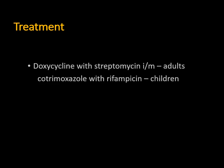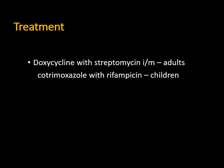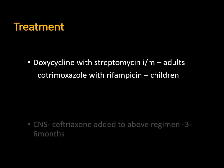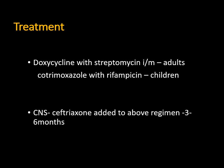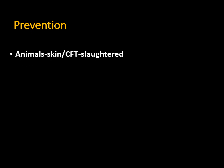Other tests in animals include the Rose Bengal card test and whey agglutination test. For treatment in adults, doxycycline is given with streptomycin intramuscularly. In children, cotrimoxazole with rifampicin is used. If there is CNS involvement, a third agent is added.